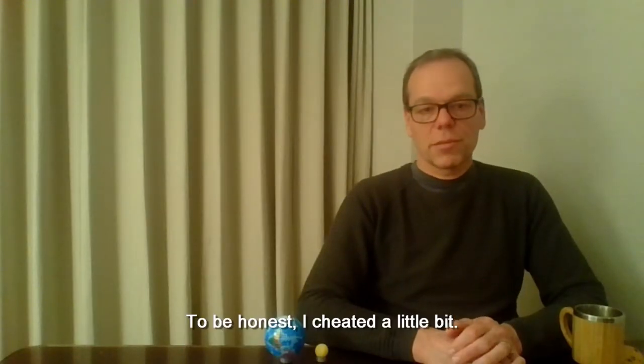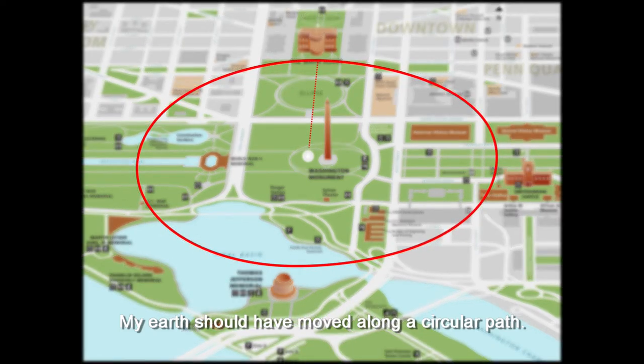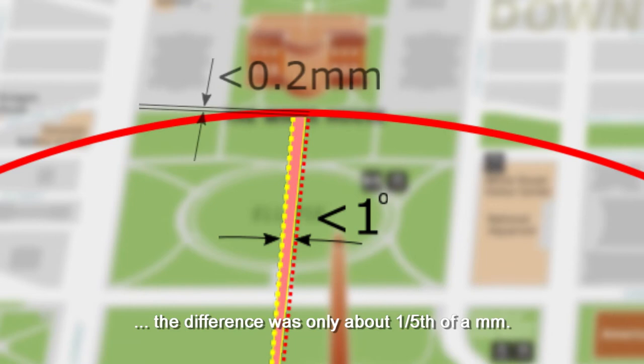To be honest, I cheated a little bit. My Earth should have moved along a circular path, but given the 850 meter radius of the circle and the fact that during one hour the Earth moved less than five percent of a degree, the difference was only about one-fifth of a millimeter.